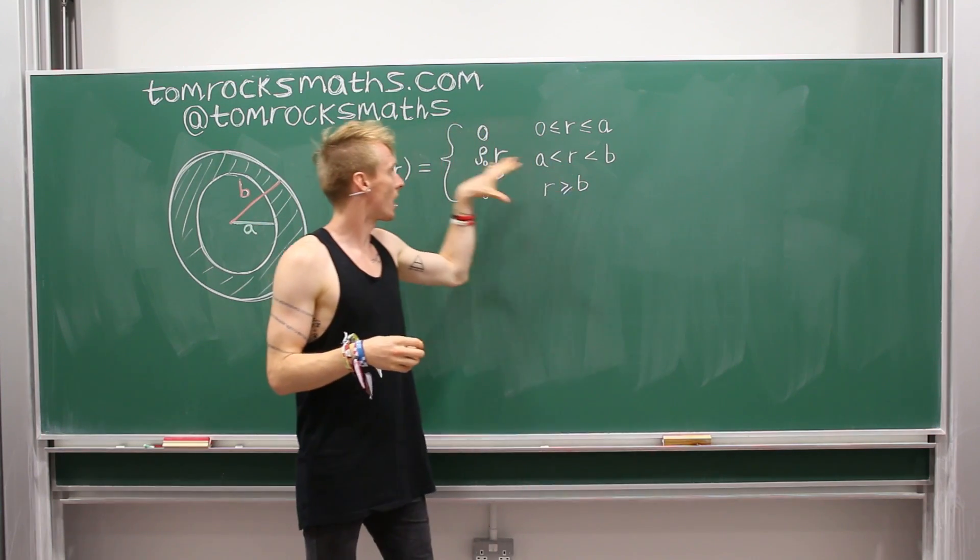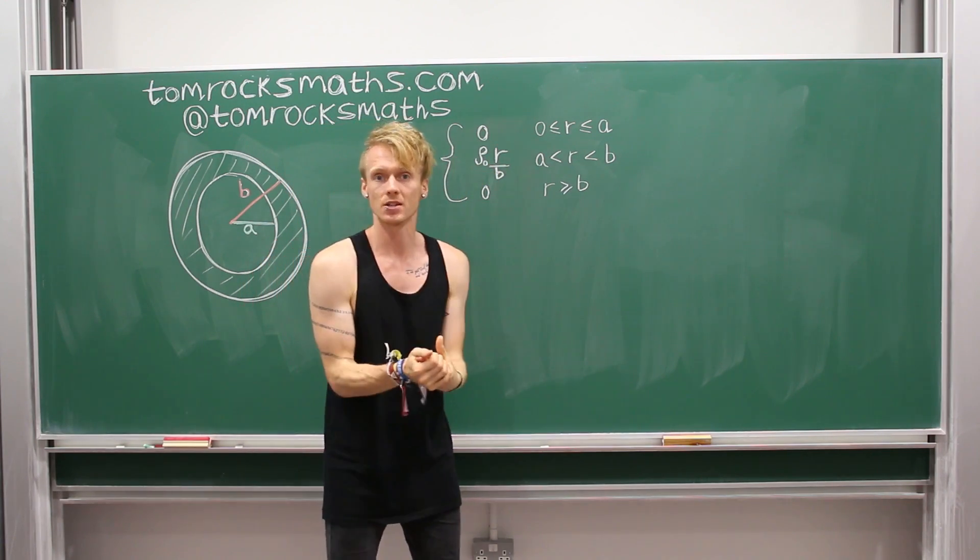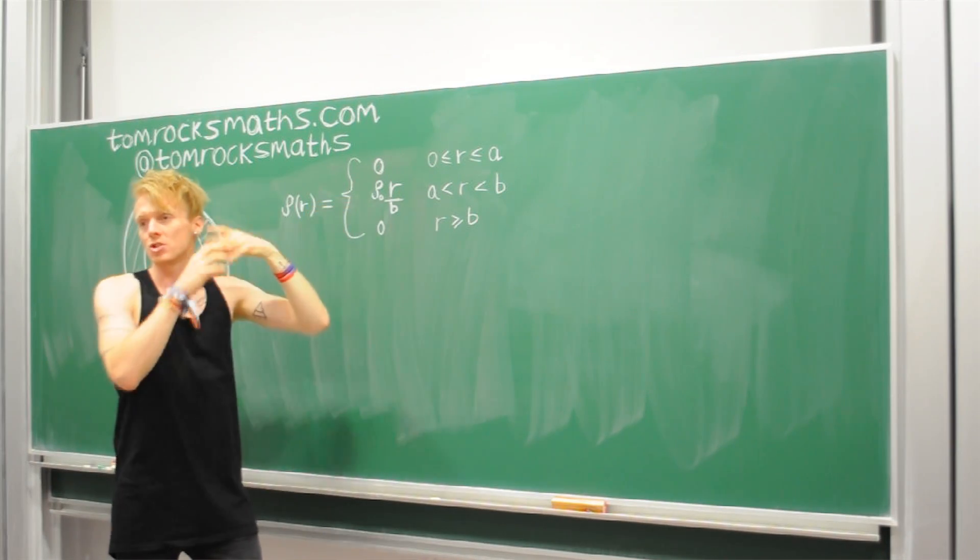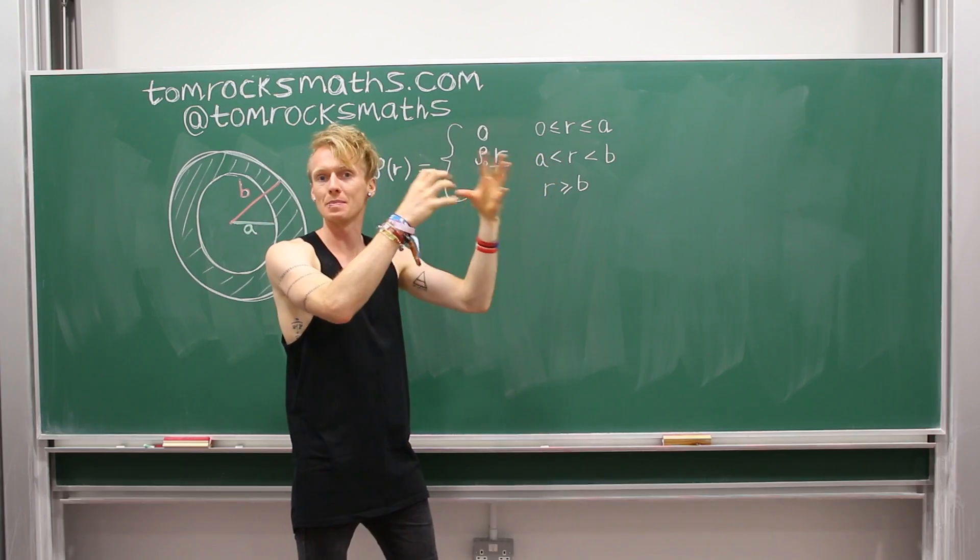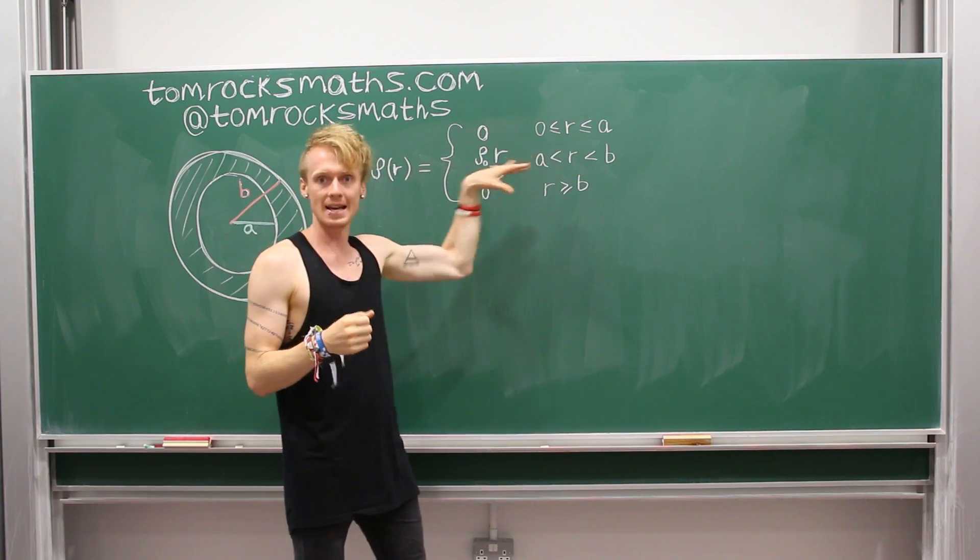And in the bit in the middle, what I've done here is create a linear function of the radius. So when the radius is A, your density is rho-naught, which is just some generic value, some base value, times A over B, where A is less than B, so it's less than rho-naught.